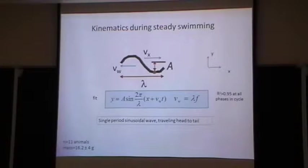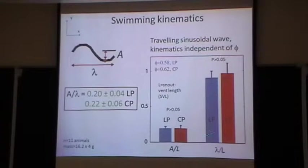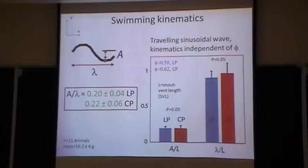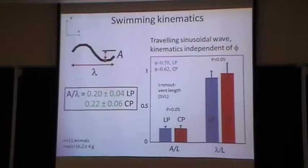It propagates a wave from anterior to posterior — head to tail — down its body. That wave can be well described by a single-period sinusoidal shape characterized by amplitude A, wavelength lambda, wave speed V_W, and average forward speed V_X. We can then ask how parameters like A and lambda depend on things like compaction of the ground. We found they don't change much at all — the animal maintains A/lambda of about 0.2, a kind of sinusoidal shape characterizing the kinematics, regardless of material preparation or particle size.